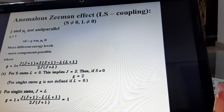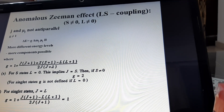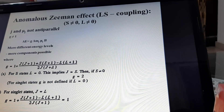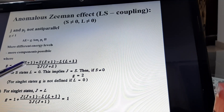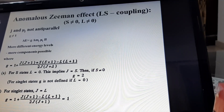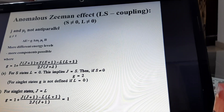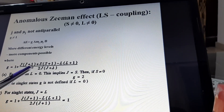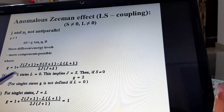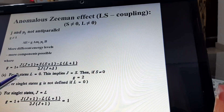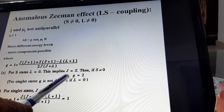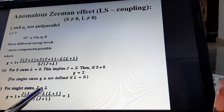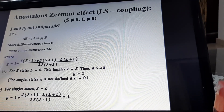So ΔE = G · ΔM_J · μ_J · B. The G factor is also called the Landé G factor, and it is given by G = 1 + [J(J+1) + S(S+1) - L(L+1)] / [2J(J+1)]. For S states where L = 0, this G value is 2, and for singlet states where J = L, the G value is 1.